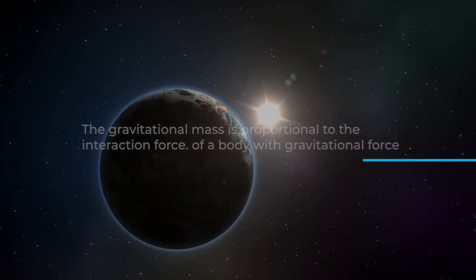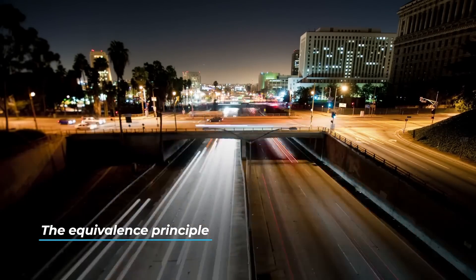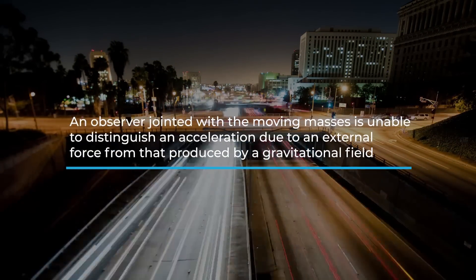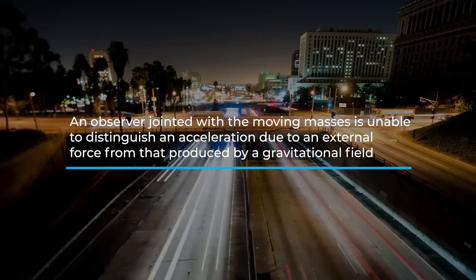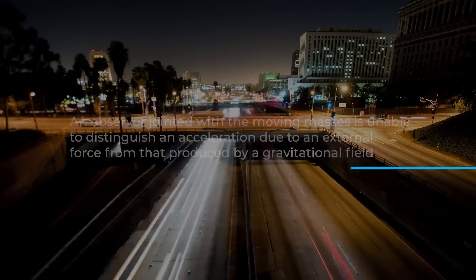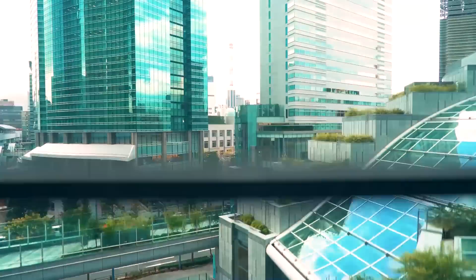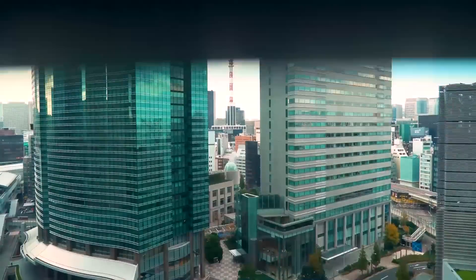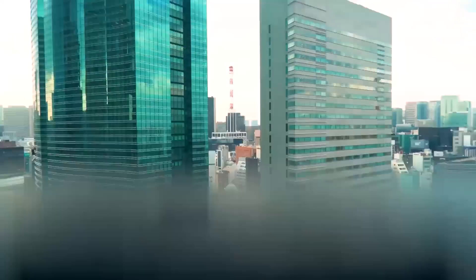While the gravitational mass is proportional to the interaction force of a body with gravitational force. The equivalence principle is so called because an observer joined with the moving masses is unable to distinguish an acceleration due to an external force from that produced by a gravitational field. The difference is visible only from a reference system that is not joined with the moving masses.